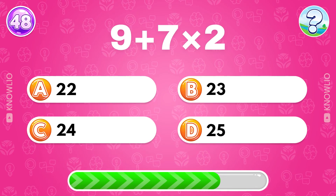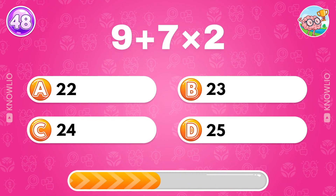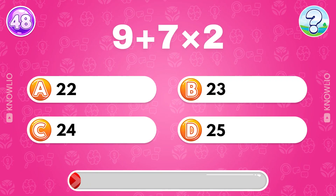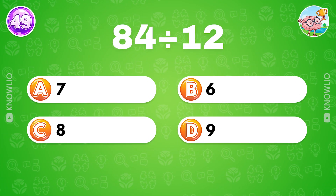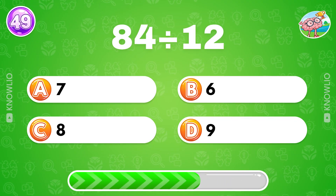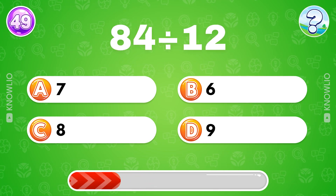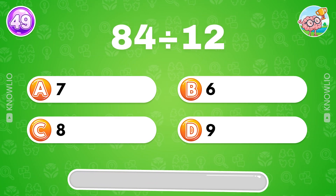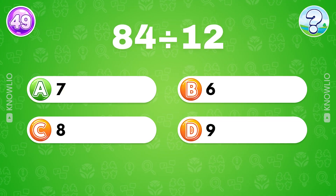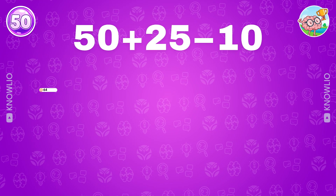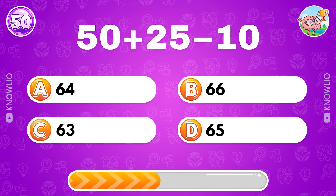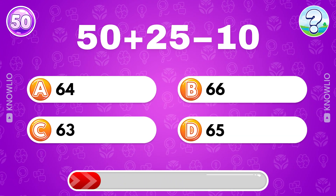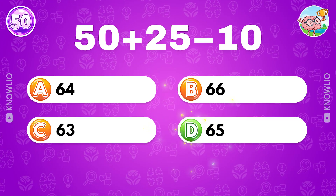Trick question: 9 plus 7 multiplied by 2? Answer B, 23. 50 plus 25 minus 10? Answer D, 65.